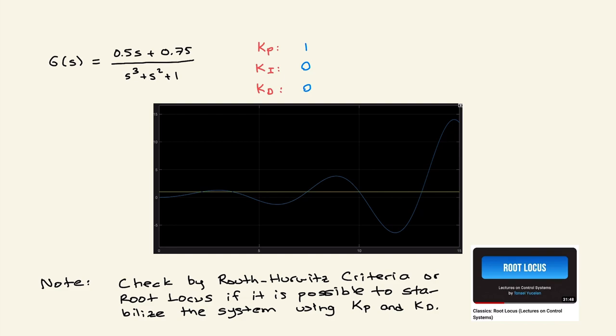Now in this case, before playing with, you know, Kp - increasing Kp will not help - I first would like to stabilize this system and then follow my original tuning guidelines similar to what I did in the previous example. I am going to try to stabilize this by applying both in addition to Kp, Kd, because Kd will have a stabilizing effect. If you want analytically, you can check by using Routh-Hurwitz criterion or root locus if it is possible to stabilize this system by using Kp and Kd together.